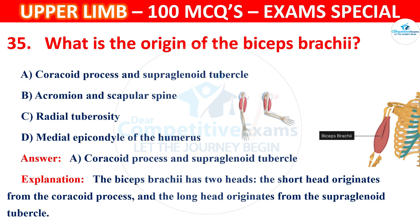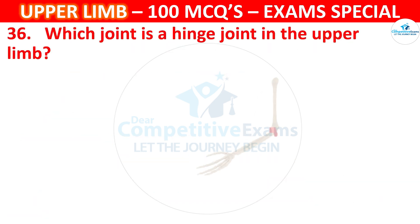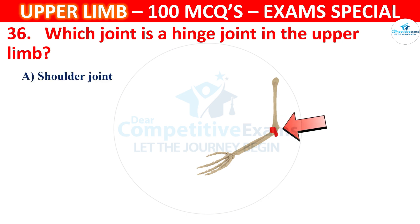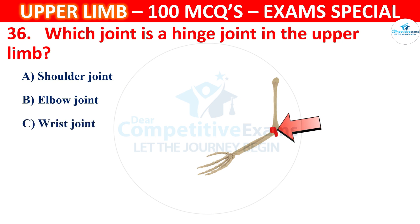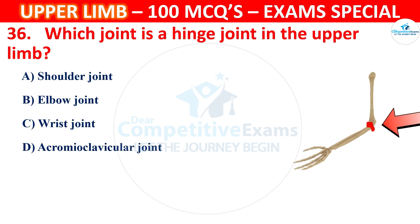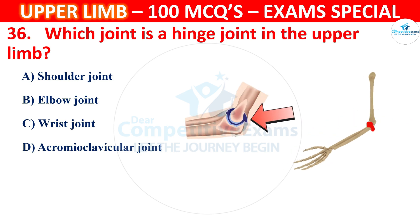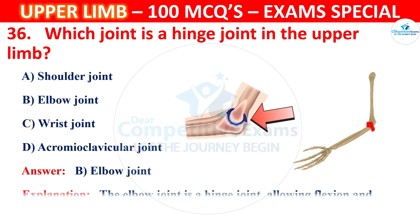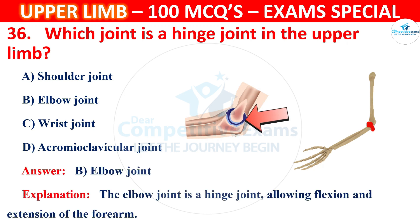Question number 36: Which joint is the hinge joint in the upper limb? Options: shoulder joint, elbow joint, wrist joint, or acromioclavicular joint. The correct answer is B, elbow joint. The elbow joint is a hinge joint allowing flexion and extension of the forearm.